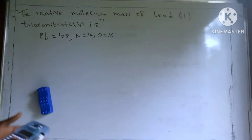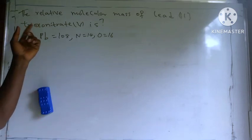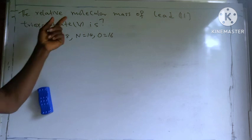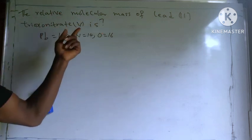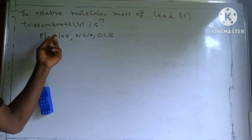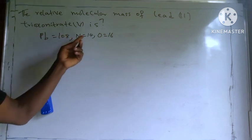Okay, welcome back to my channel. So in this video we are asked to calculate the relative molecular mass of lead 2 nitrate 5. The atomic mass of lead is 108, nitrogen is 14, and oxygen is 16.